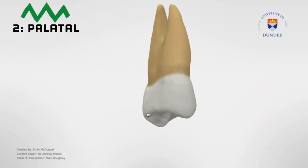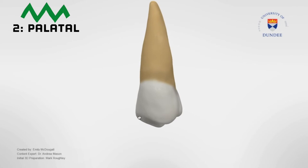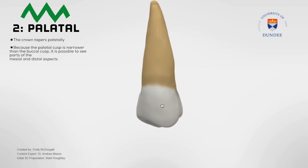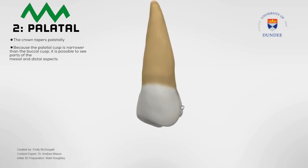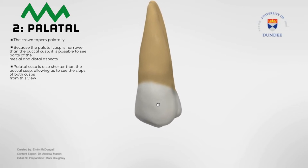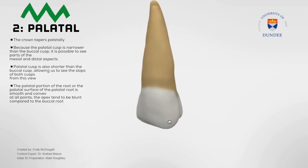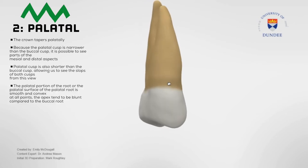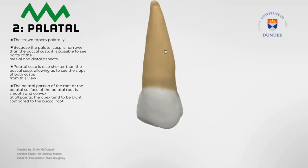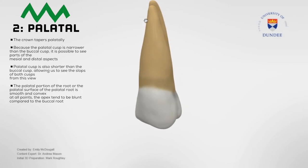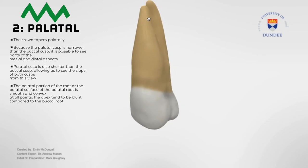Moving on to the palatal view, from this aspect we can observe that the crown tapers palatally. Because the palatal cusp is narrower than the buccal cusp, it is possible to see some part of the mesial and distal aspects. The palatal cusp is also shorter than the buccal cusp, allowing us to see the slopes of both cusps from this one view. The palatal surface of the palatal root is smooth and convex at all points, and the apex tends to be blunt compared to the buccal root.